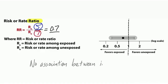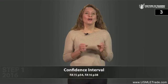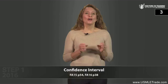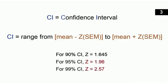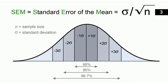Before we go further, let's work through some practice questions. The confidence interval is the mean plus or minus Z times the standard error of the mean. Z depends on which confidence interval you're calculating: for 90%, Z = 1.645; for 95%, Z = 1.96; for 99%, Z = 2.57. The standard error of the mean is the standard deviation divided by the square root of the sample size.